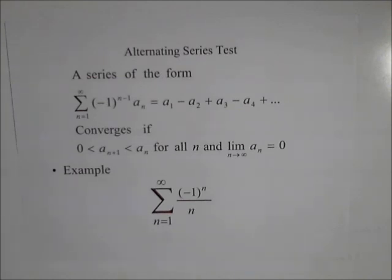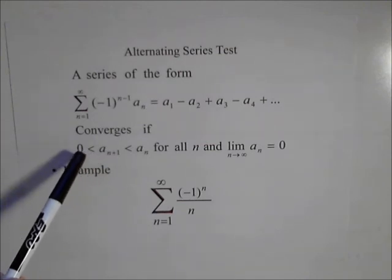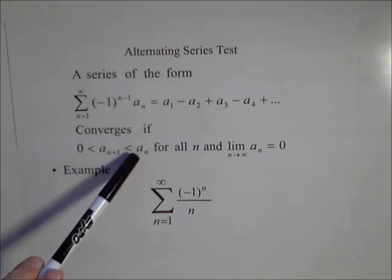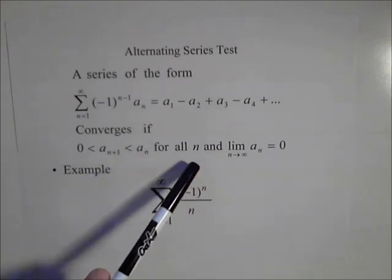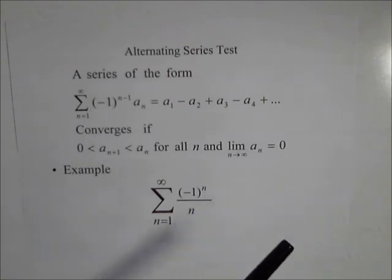In order for an alternating series test to converge, we need that it is decreasing. In other words, term a sub n plus one must always be less than term a sub n for all n, and that the limit as n goes to infinity of a sub n must be zero.